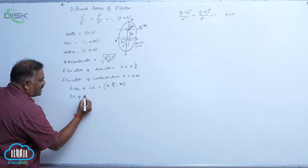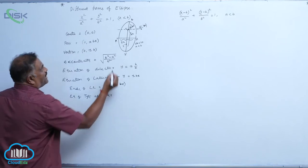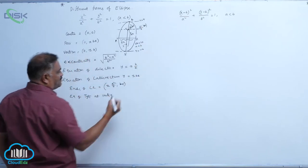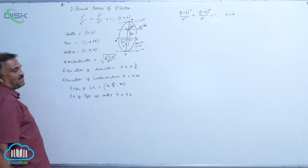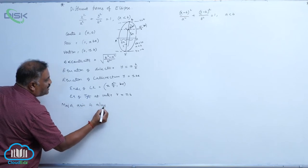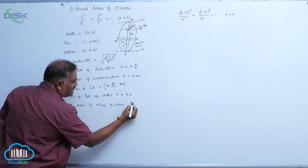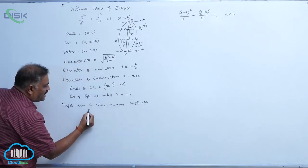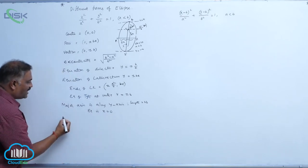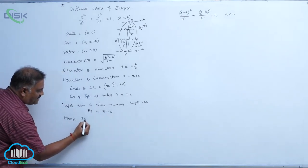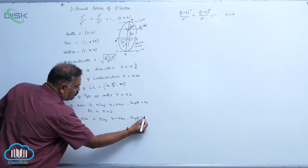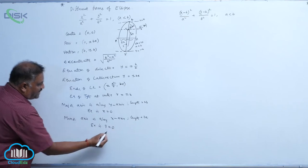Equation of tangent at vertex is given by y = b and y = −b, that is y = ±b. Major axis is along the y-axis, its length is given by 2b, and its equation is x = 0. Minor axis is along the x-axis, its length is given by 2a, and its equation is y = 0.